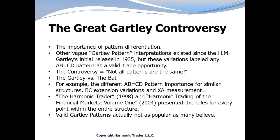This controversy lies in the fact that not all patterns are the same. Within the harmonic trading approach, the Gartley and the Bat are two similar M and W-type patterns that possess different ratio alignments and specific strategies for turning patterns into profits. The different AB equals CD pattern importance, BC extension variations, and XA measurement techniques are different for both of these similar structures.